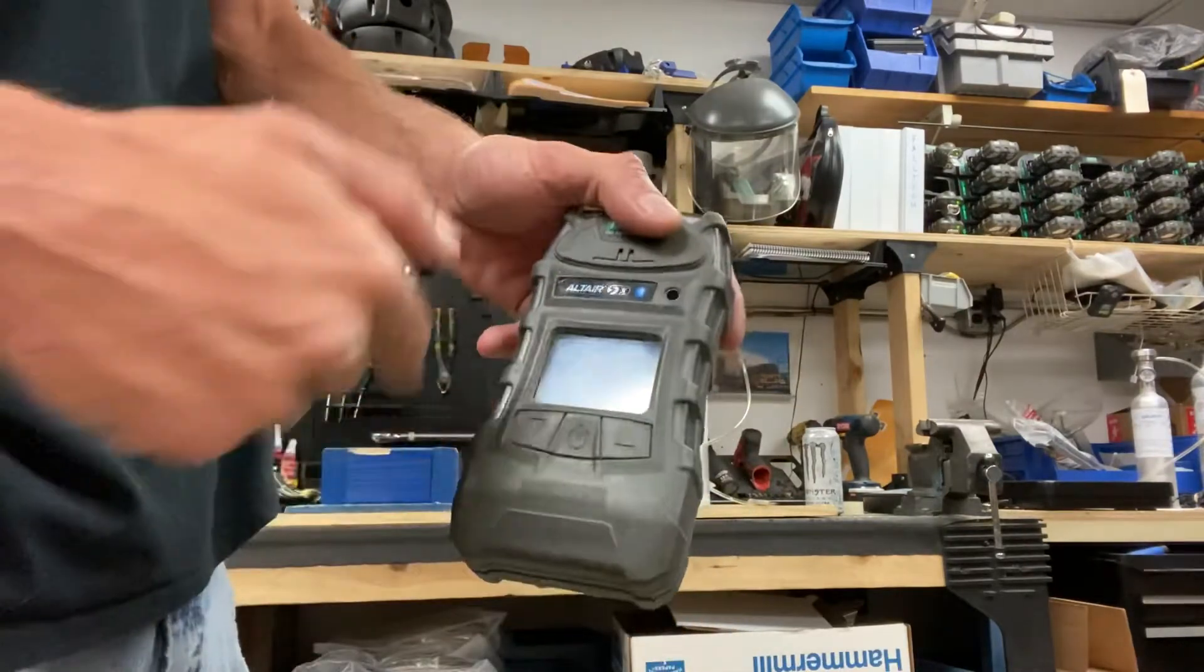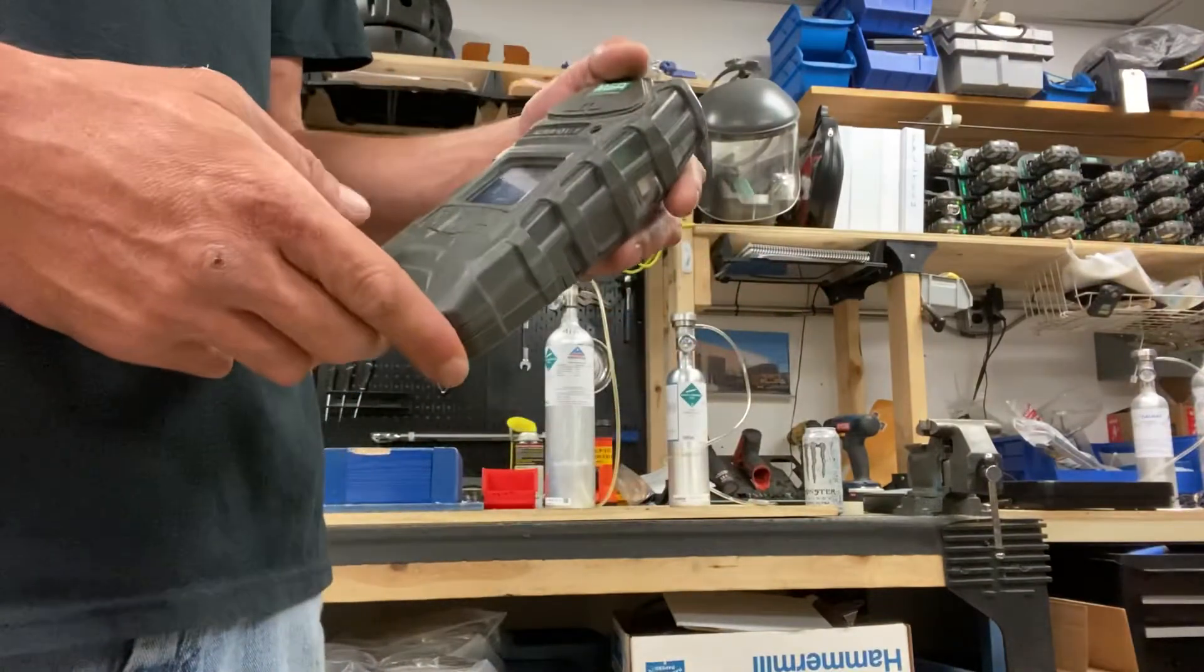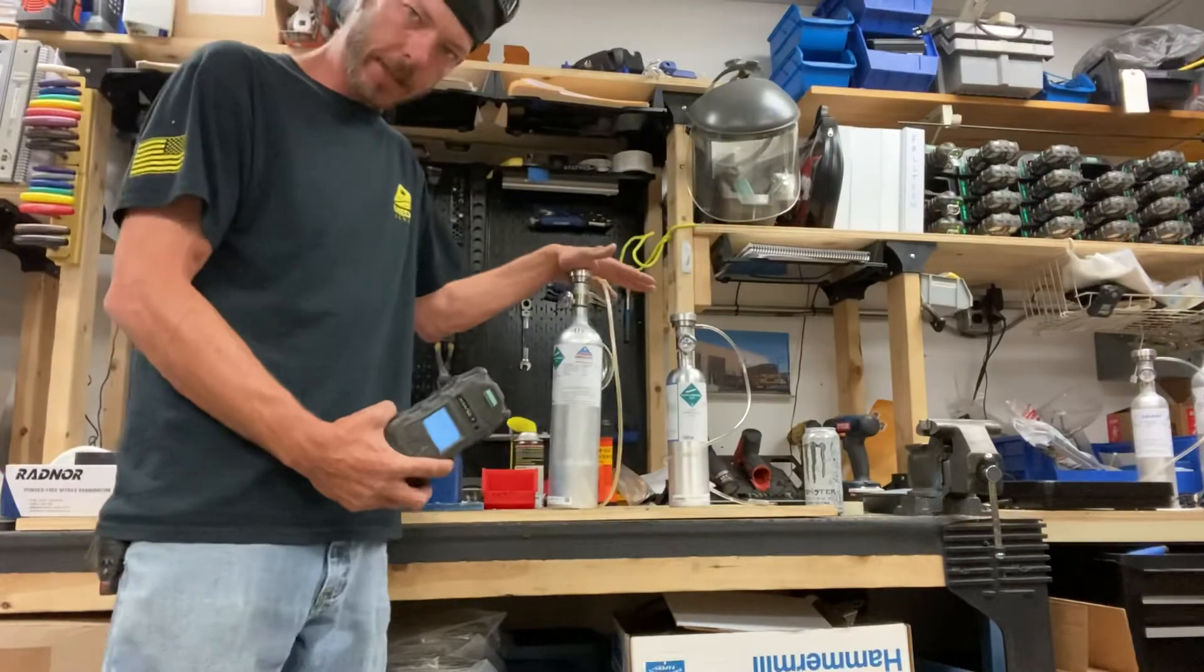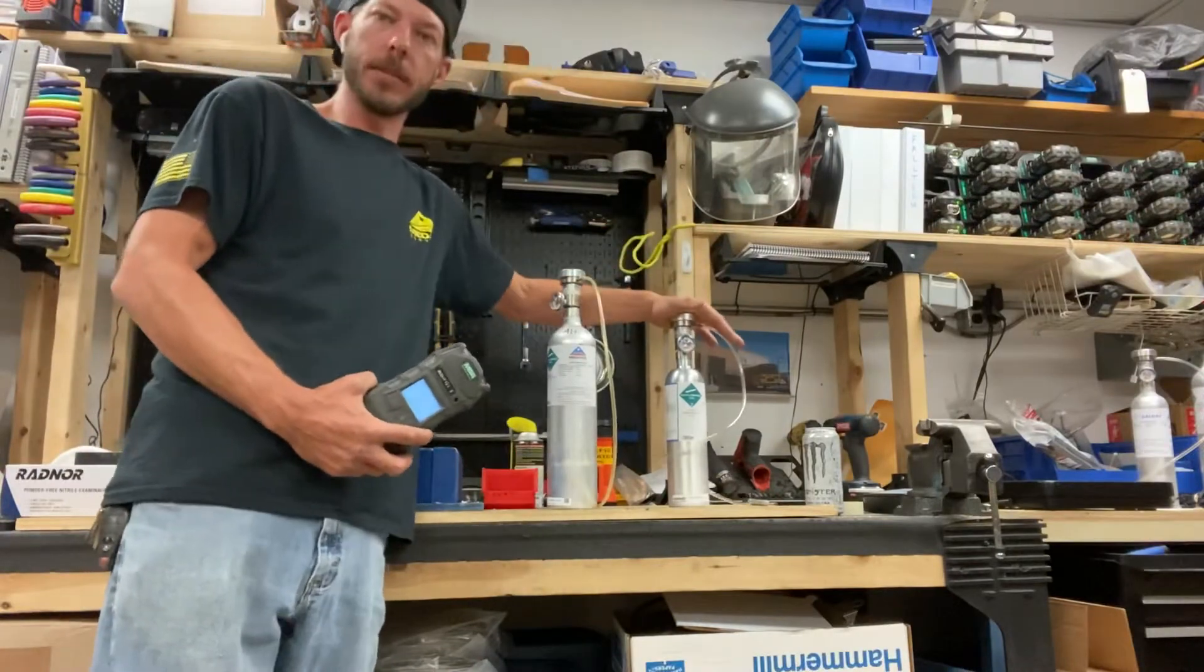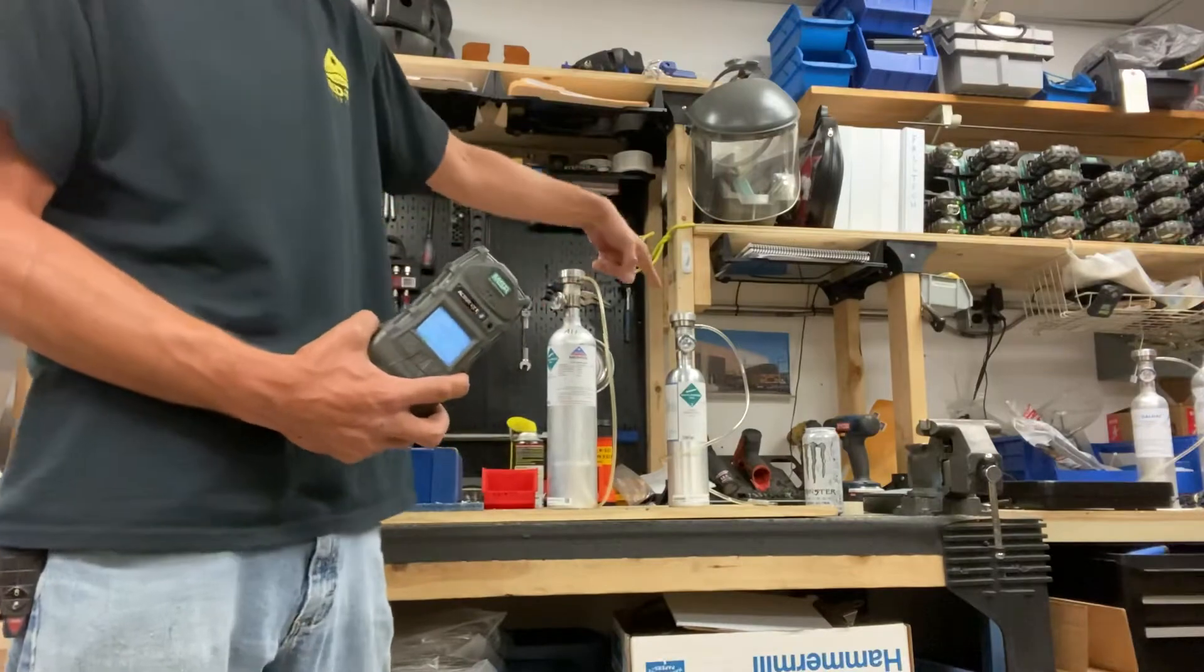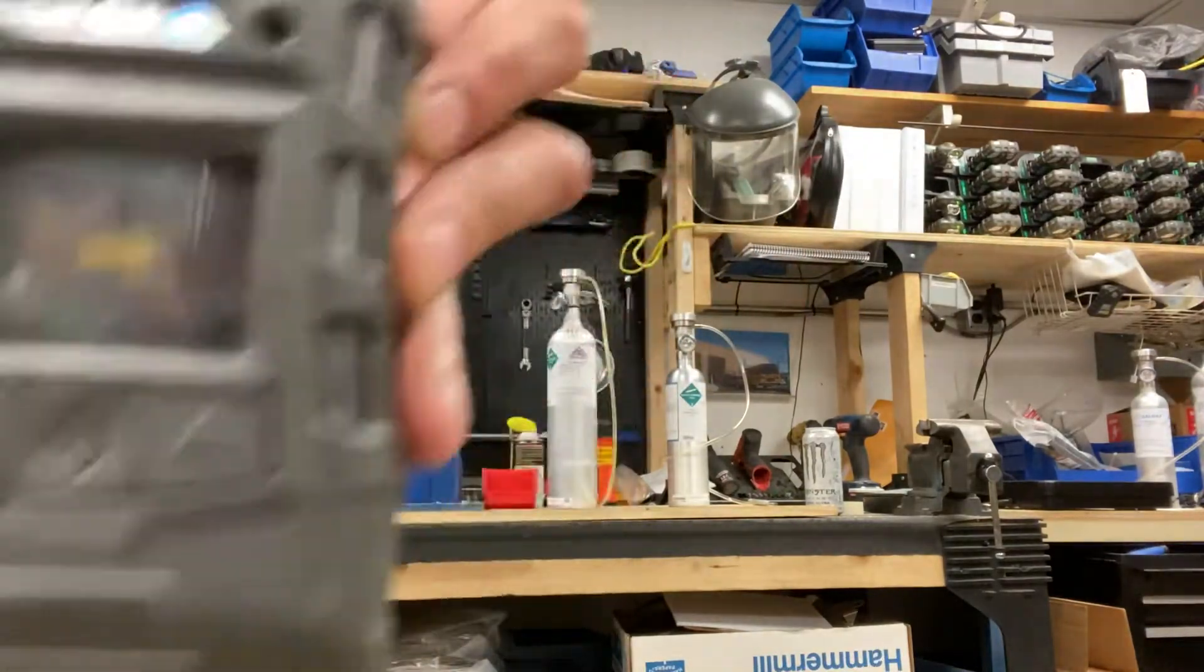Then what it's gonna do is go through its sensor refresh. Soon as it's done that, then it's time to calibrate. You're always gonna do your Altair gas first and then your isobutylene, never the other way around. Always four-gas first and then your iso.